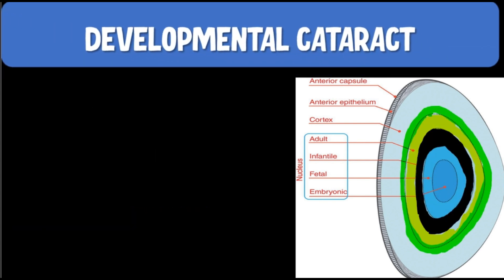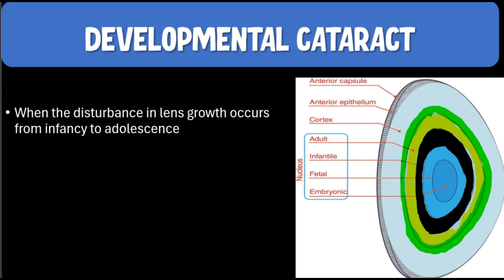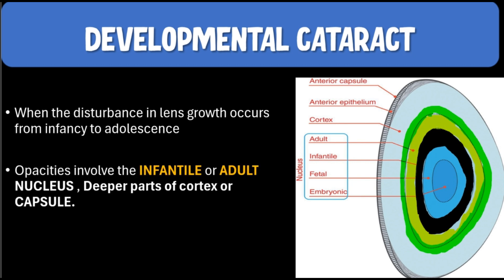Next, we have the developmental cataract. This occurs when there is a disturbance in lens growth from infancy to adolescence, and here the opacities will involve the infantile nucleus and the adult nucleus — and sometimes even deeper parts of the cortex or the capsule. That is one very important differentiation between congenital and the developmental cataract.